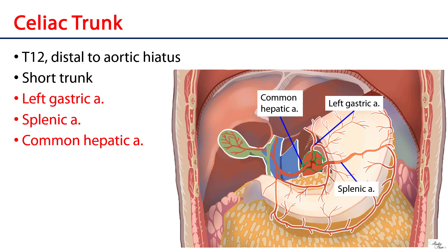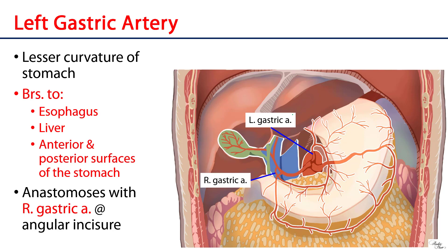There are three major branches: the left gastric artery, the splenic artery, and the common hepatic artery. Let's look at each of these as individual vessels.